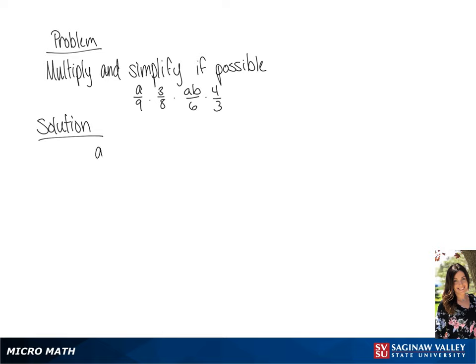We have the problem a over 9 times 3 over 8 times ab over 6 times 4 over 3. We're going to go ahead and simplify before we multiply.